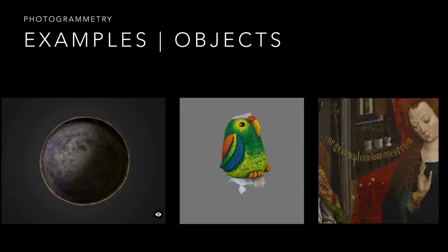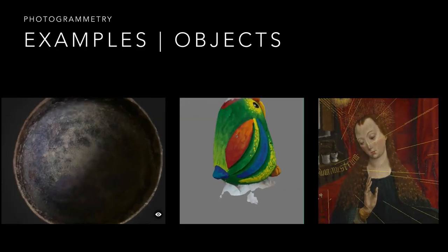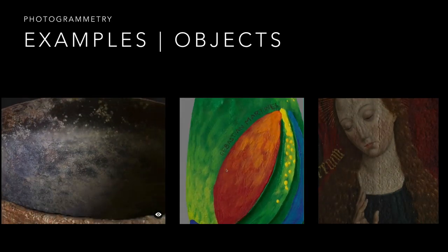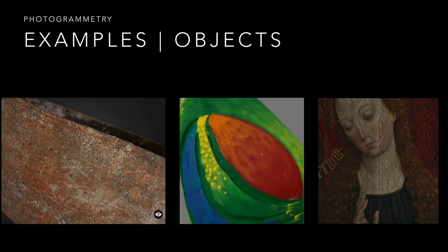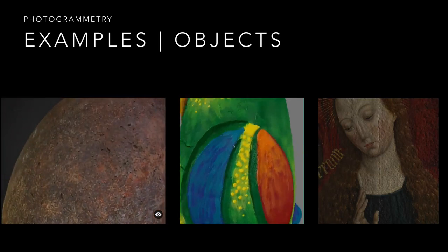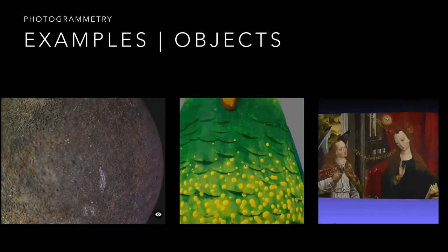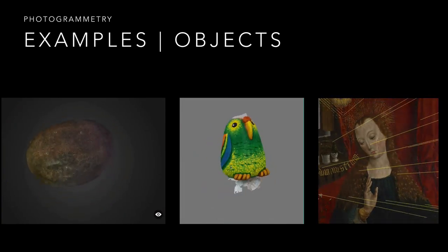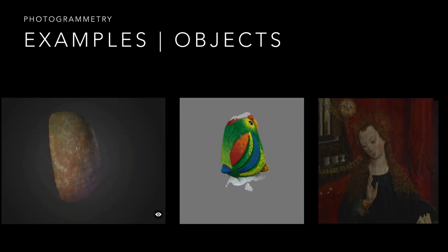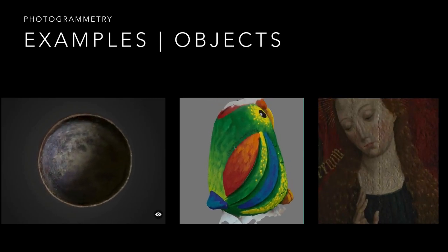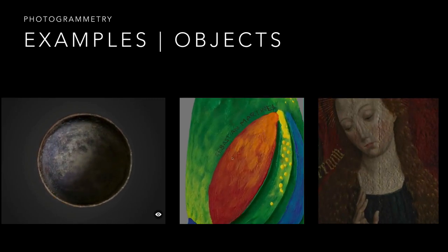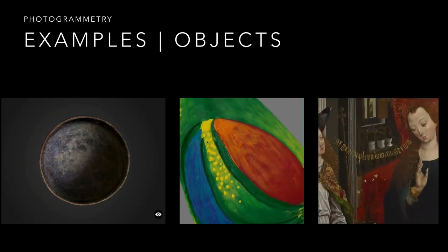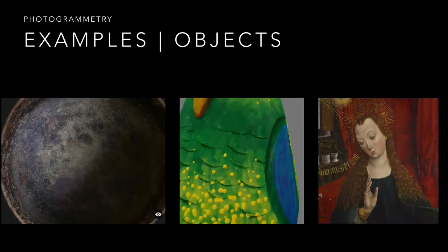So let's jump right in and take a look at some examples. These are three-dimensional representations of objects that are very well suited for 3D archival imaging techniques. Depending on the object, there will be different requirements for the environment, the amount of photos that you'll need to take, and the way in which these photos are taken. But all of this is definitely learnable, and thanks to some remarkable advances in just the last few years, it's also very affordable for the first time in history.